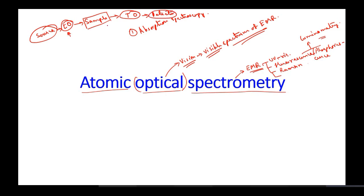This is the general layout in absorption spectroscopy. We have discussed UV visible spectroscopy both in absorption spectroscopy and in reflectance spectroscopy. The second type is reflectance spectroscopy.